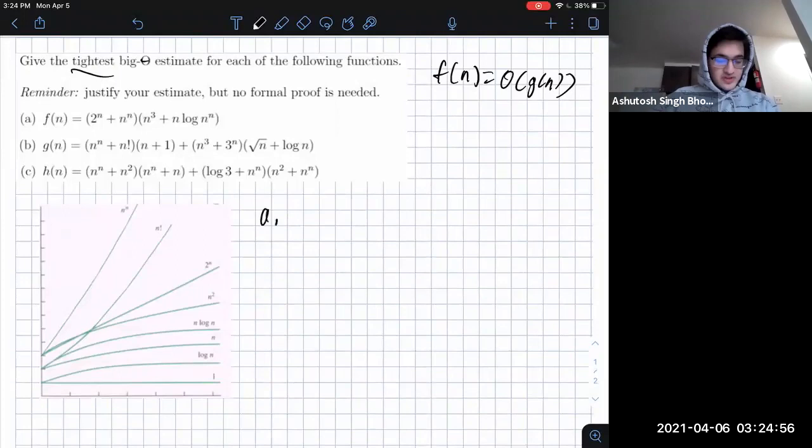So if you take a look at a and you expand this, you would have 2 to the n times n cubed plus n to the n times n cubed plus n to the n, or I should say 2 to the n times n log n plus n to the n times n log n.